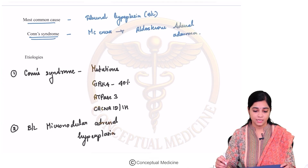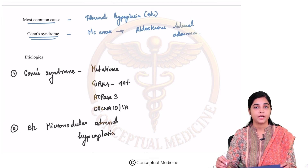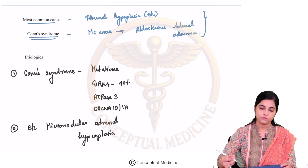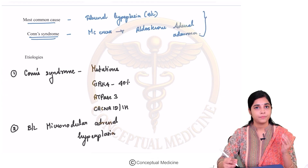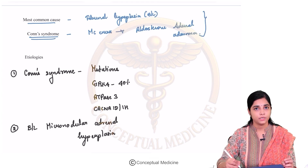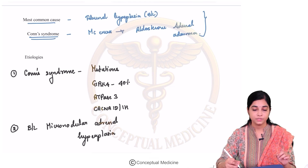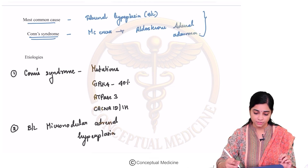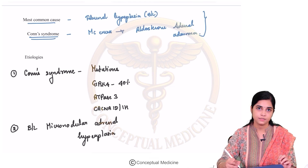Bilateral adrenal hyperplasia and aldosterone-producing adrenal adenoma make up Conn's syndrome. These two make up the majority of the etiologies for mineralocorticoid excess.